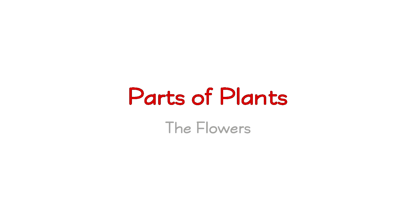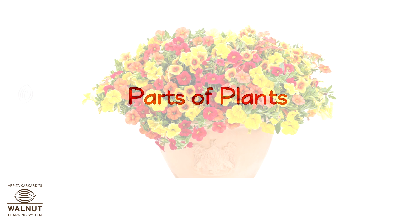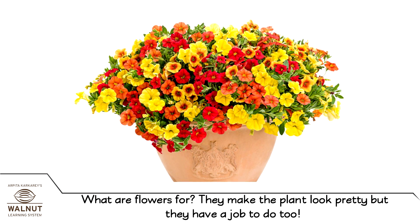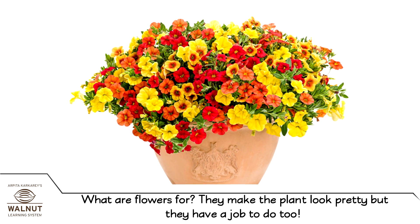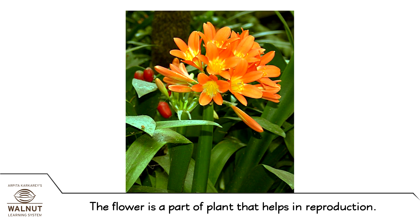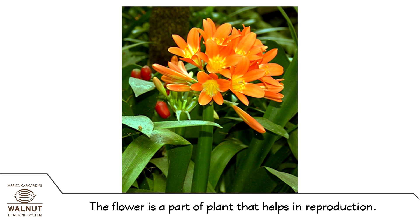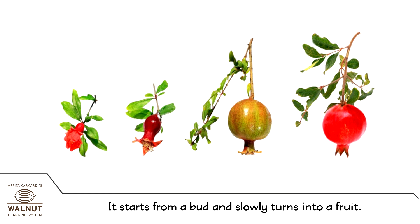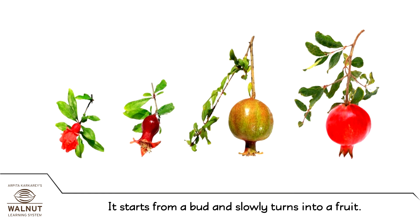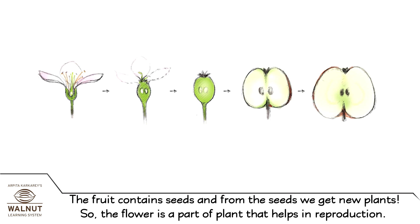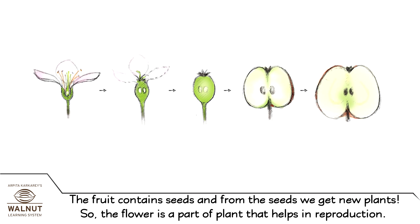Parts of Plants: The Flowers. What are flowers for? They make the plant look pretty, but they have a job to do too. The flower is a part of the plant that helps in reproduction. It starts from a bud and slowly turns into a fruit. The fruit contains seeds and from the seeds we get new plants.